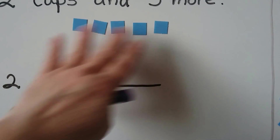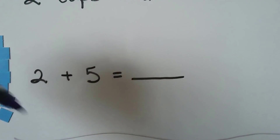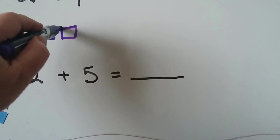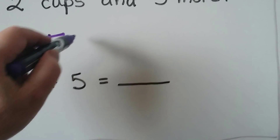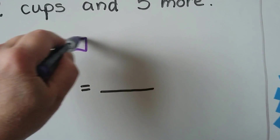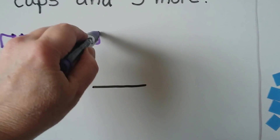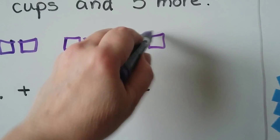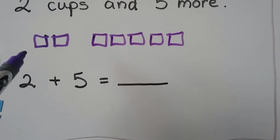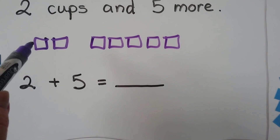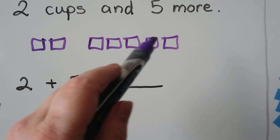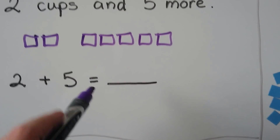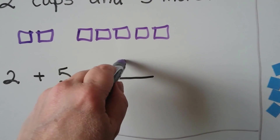If we don't have counters, we can try drawing them. One, two, and five more: one, two, three, four, five. We add them all together: one, two, three, four, five, six, seven. Two plus five is equal to seven.